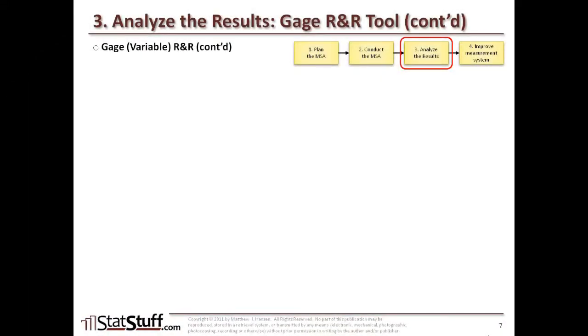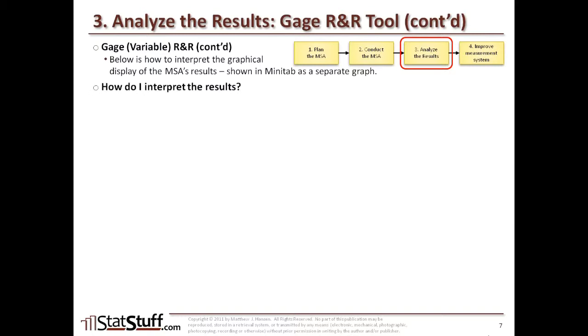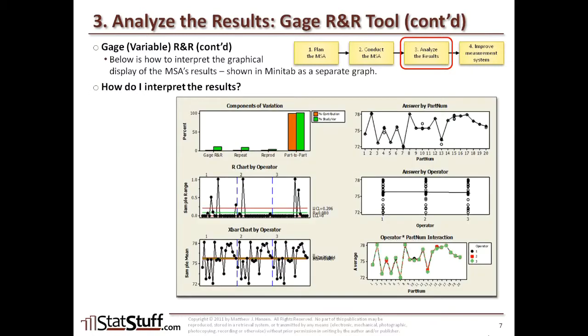Now let's change our focus by looking at how to interpret the Minitab results displayed in the graphs window. Here's an example of what the total graphs window might look like as a result of running this gauge R&R study. What we're going to pay most attention to are these two lower left charts.